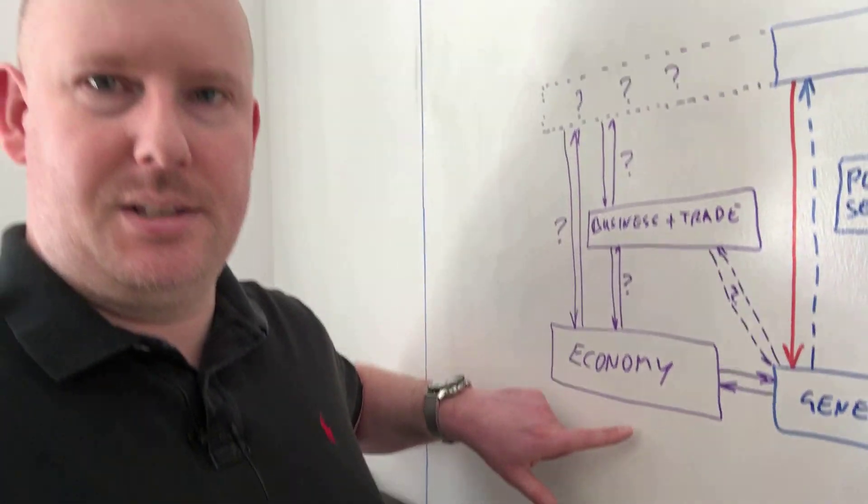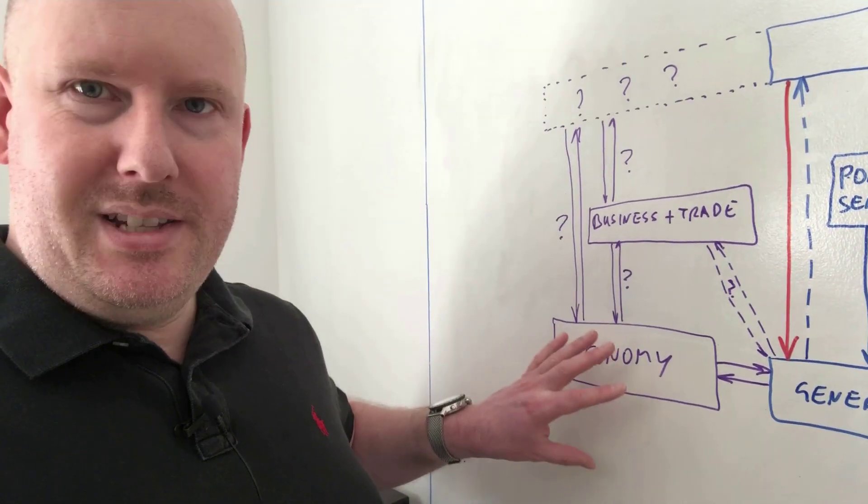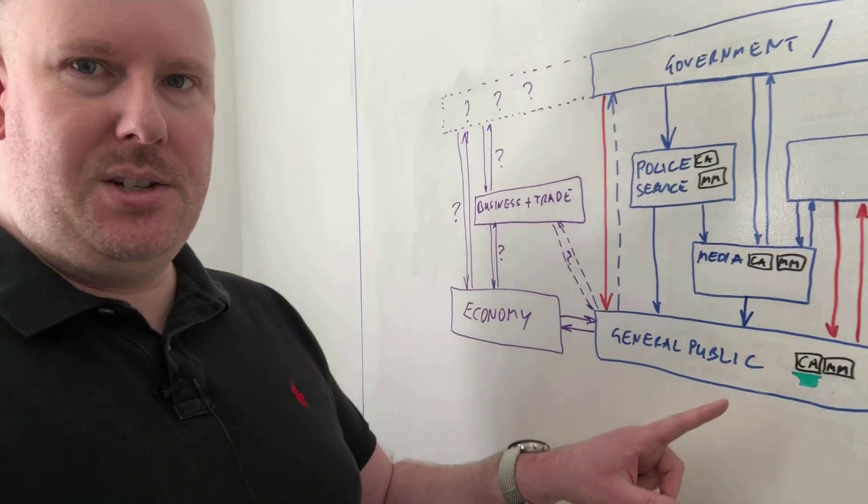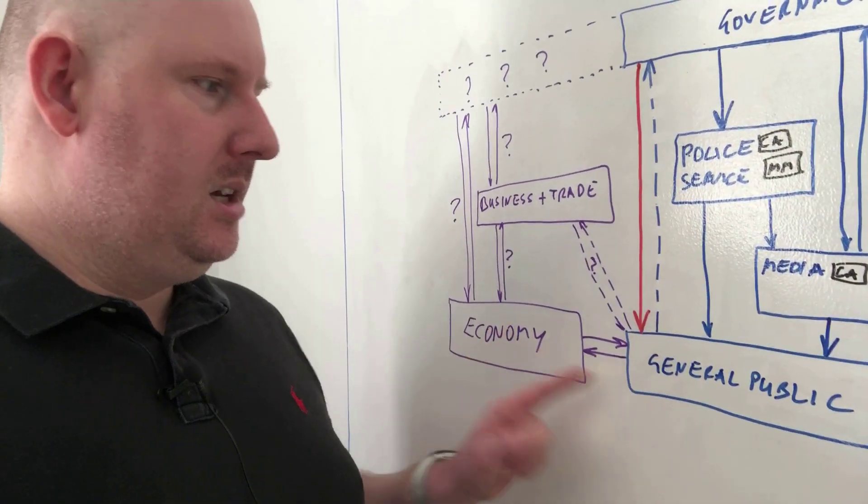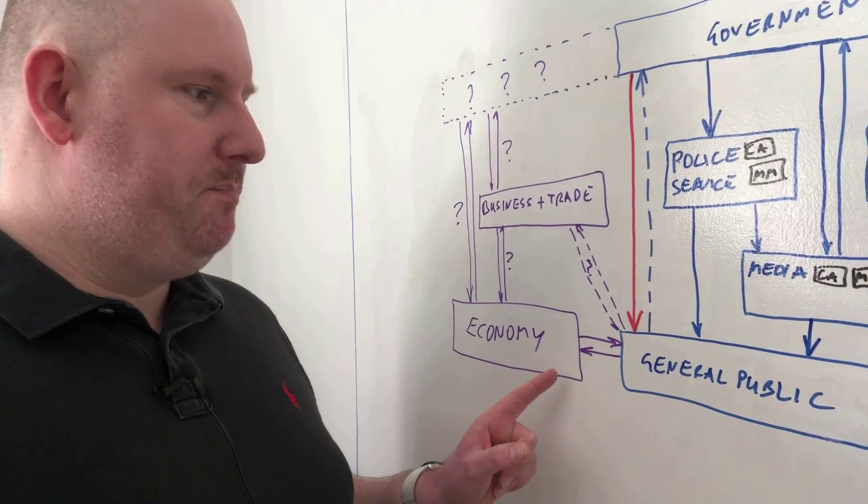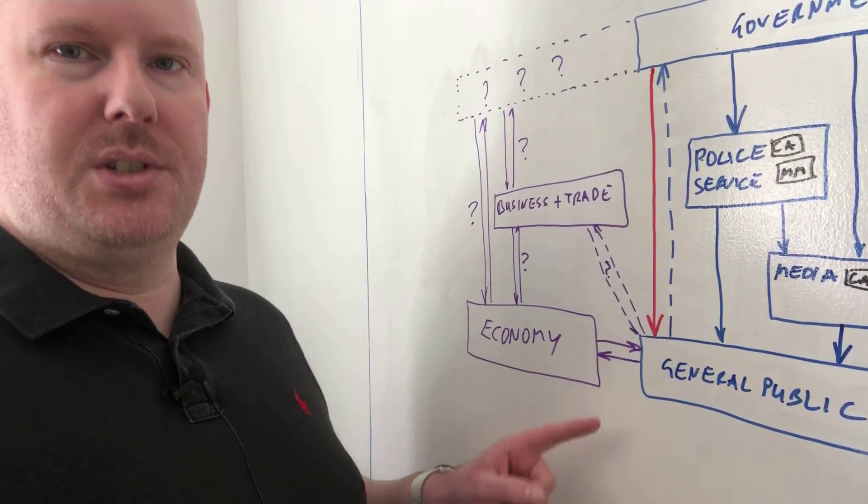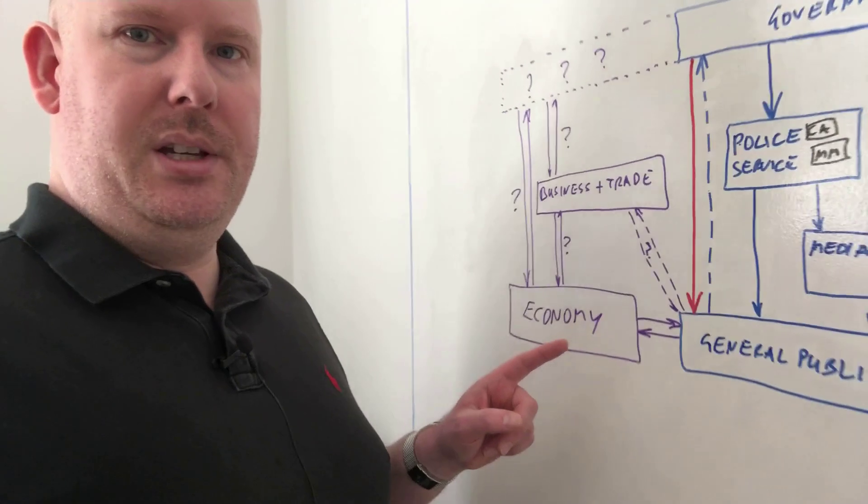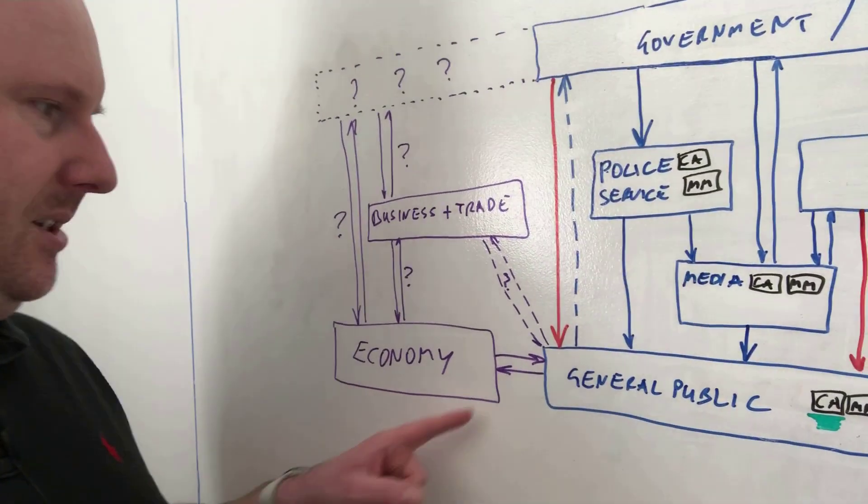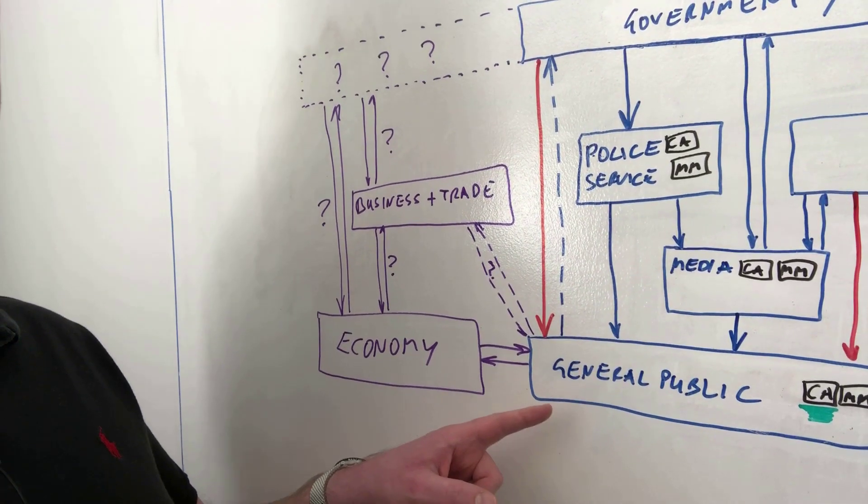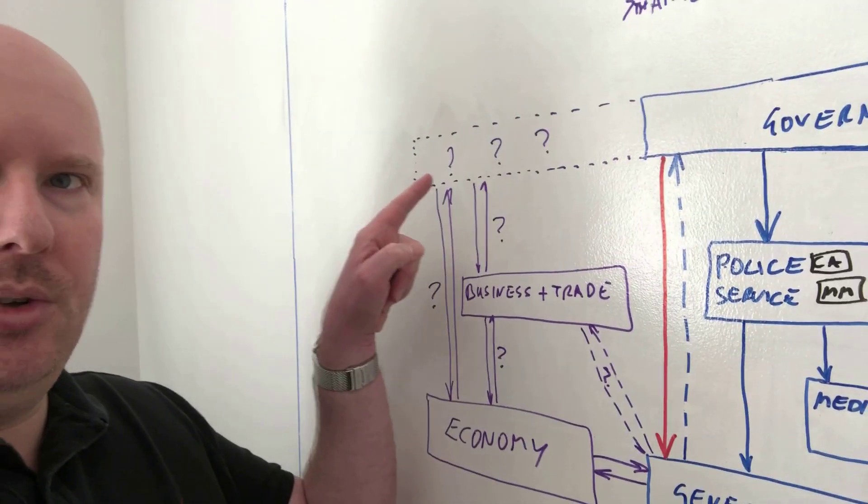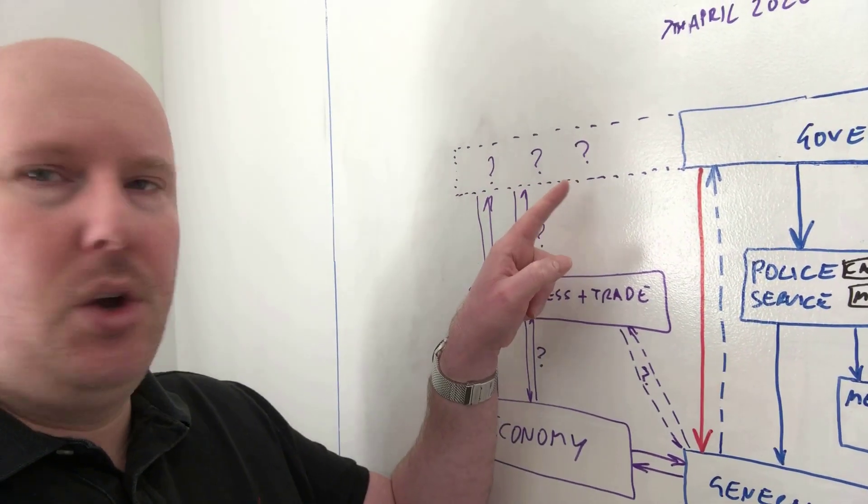It's the economy. What is that under the control and influence of? Well clearly there's a relationship with the general public both from having an economy that pays taxes and provides employment and goods and services, but also that the success of the economy has an effect on their daily lives. You've then also got the business and trade aspects.